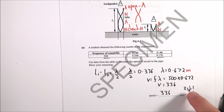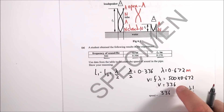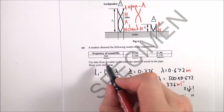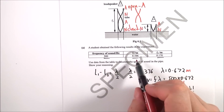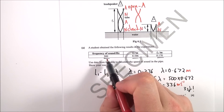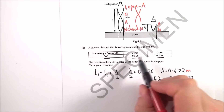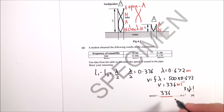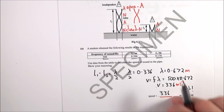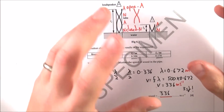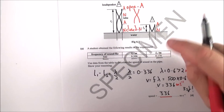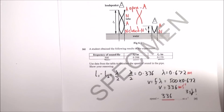Putting the numbers in from the table gives a speed of 336 m/s. That answer is to three significant figures, matching the data given. It's also a reasonable value since sound travels at about 330–340 m/s in air. Question 6a works out nicely.